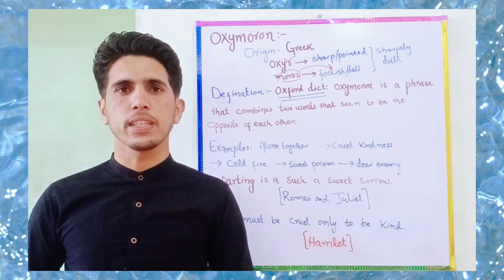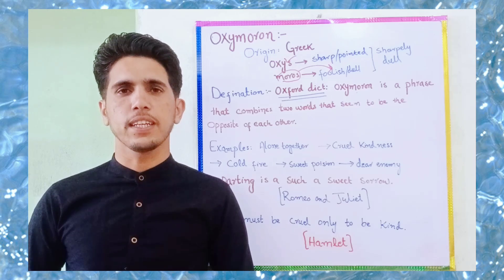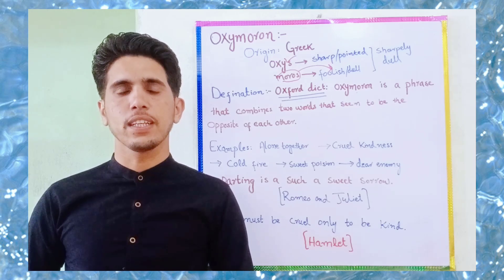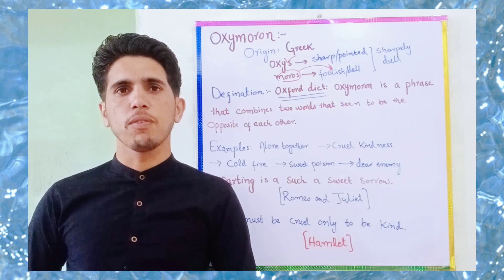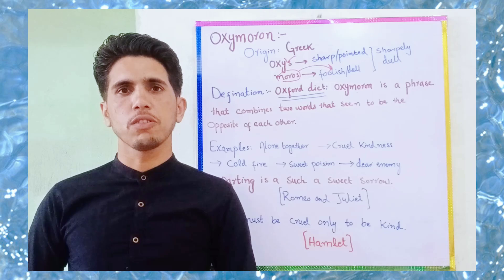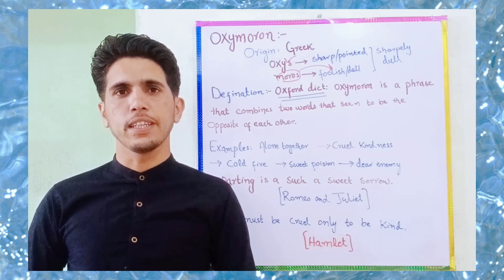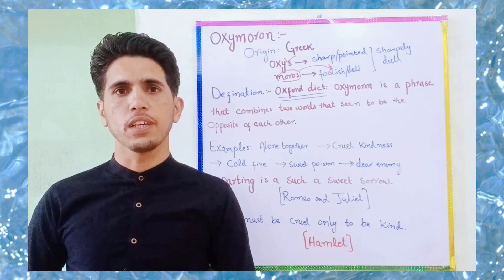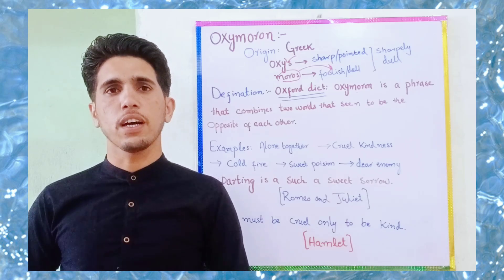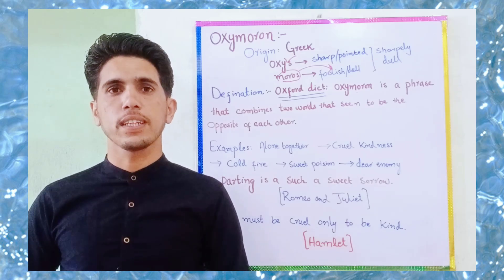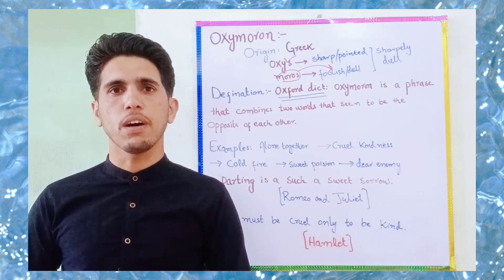Oxymoron is a literary device that has been used across different time periods of history. It has been used in Greek literature, then Latin literature, then it was introduced into English literature. William Shakespeare, John Donne, and many romantic poets have immensely used this poetic and literary device.